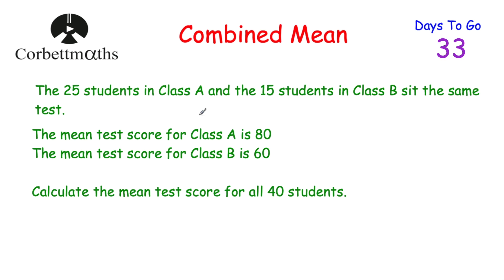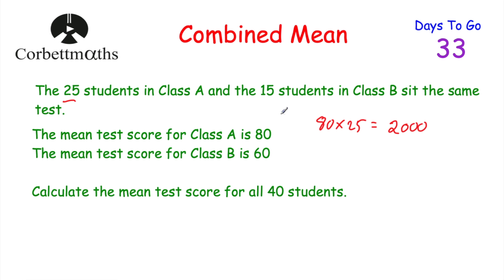Feel free to press pause and try it yourself. If I was doing this question, the first thing I would do is focus on the students in class A. Their mean is 80, and remember to find the mean we add up all the values and divide by the number of values, which is 25, to get 80. So if we take 80 and multiply that by 25, we can find out what all the test scores in class A add up to. 80 multiplied by 25 is equal to 2,000.